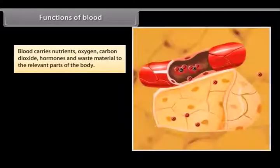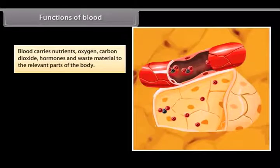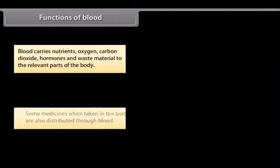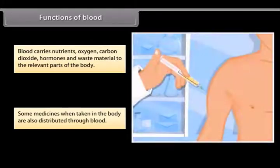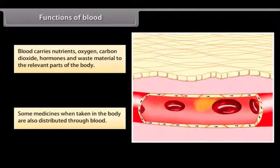Blood carries nutrients, oxygen, carbon dioxide, hormones and waste material to the relevant parts of the body. Some medicines, when taken into the body, are also distributed through blood.